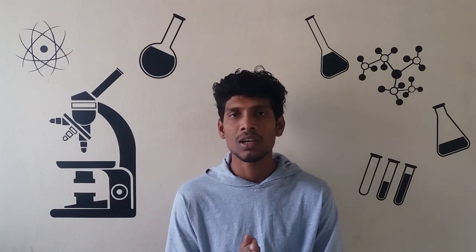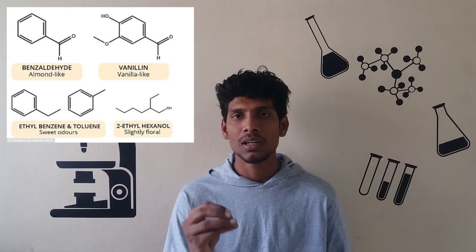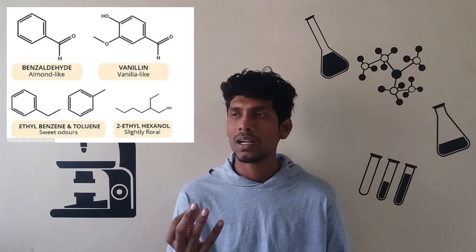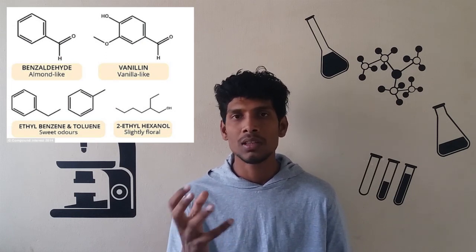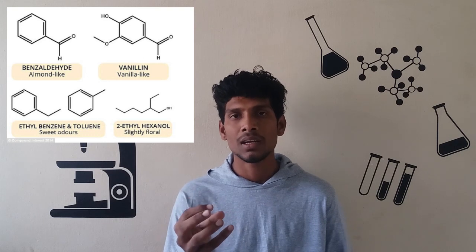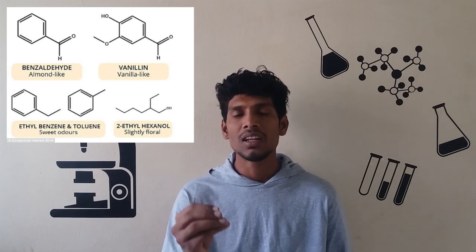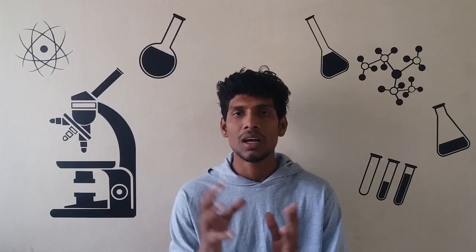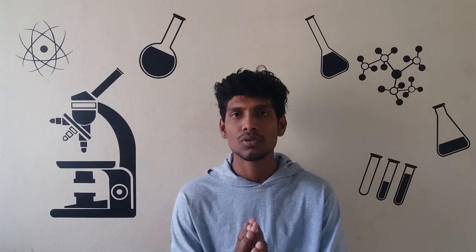There are many types of volatile organic compounds. For example, ethyl benzene has a sweet smell, benzaldehyde has a bottom smell, and vanillin has a vanilla smell. These are the volatile organic compounds.